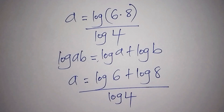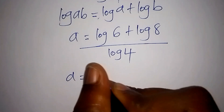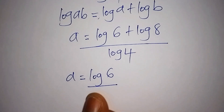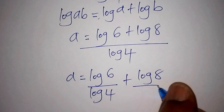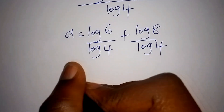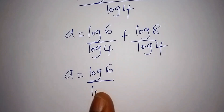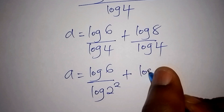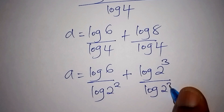Next, we group them: a equals log of 6 over log of 4, plus log of 8 over log of 4. We can rewrite log of 4 as log of 2 to the power of 2, and log of 8 as log of 2 to the power of 3, all over log of 2 to the power of 2.